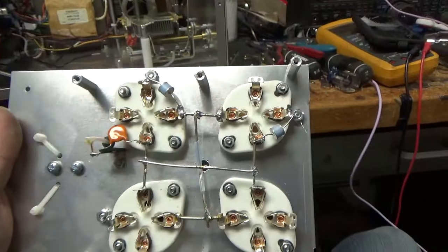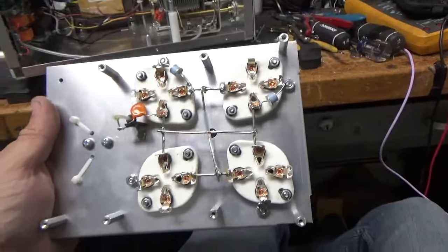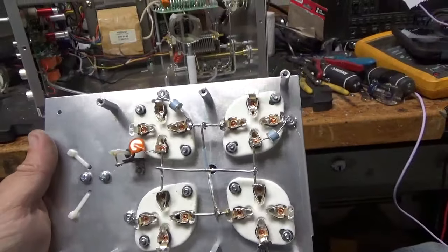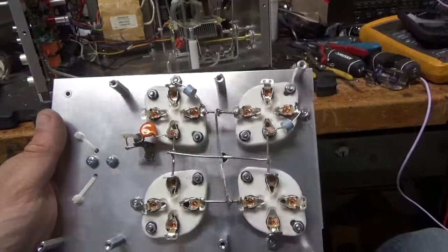I compressed the socket clips, added the gas discharge tubes, and grounded the grid for each tube right to the chassis metal.